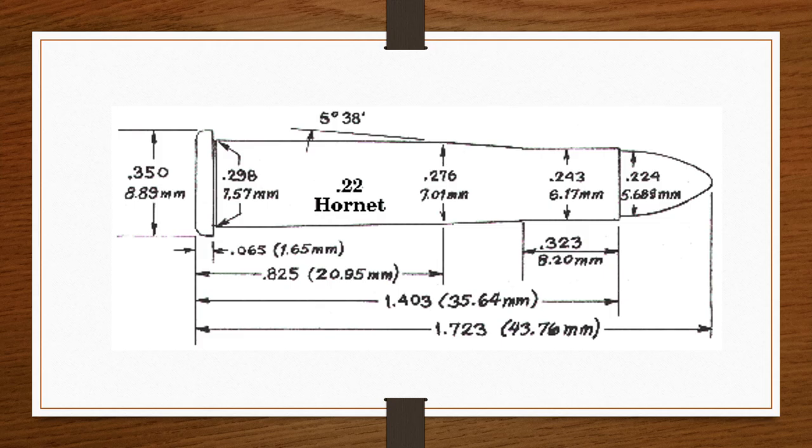Early rifles had bores requiring bullets in the .223 inch diameter. Sierra still offers such bullets. Later rifles had the normal bores of .224 inch diameter. Most bullet manufacturers offer special bullets for loading the Hornet.